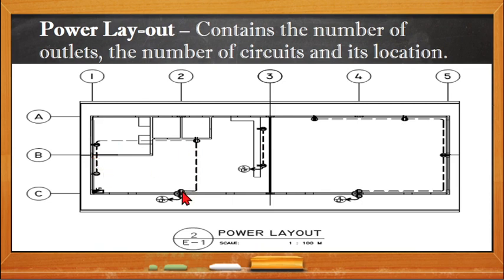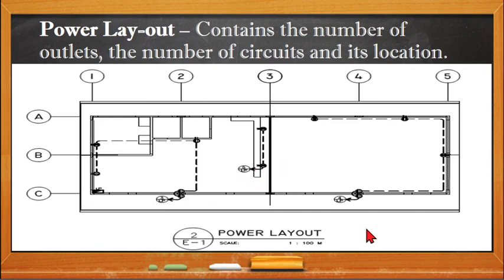As you can see, we have 13 outlets in this example. They are divided into three circuits, because we have the symbol for the home run, and each home run is equivalent to one circuit. Each circuit in the plan will be equivalent to one circuit breaker. This is the symbol for the location of the panel board.